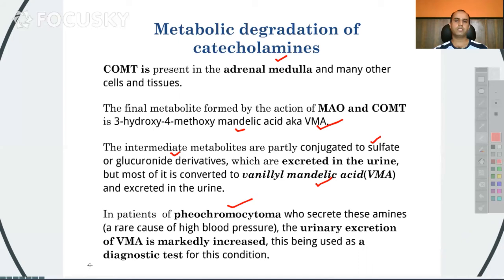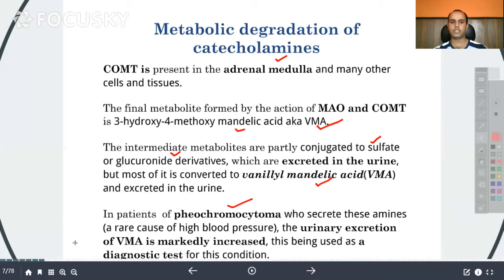In patients with pheochromocytoma, which secretes catecholamines and is a rare cause of high blood pressure, the urinary excretion of VMA is markedly increased. This is the diagnostic test for the condition.